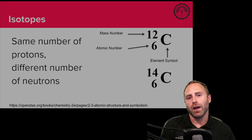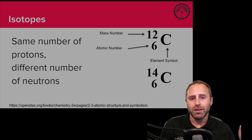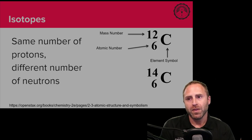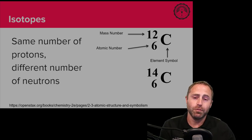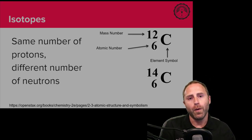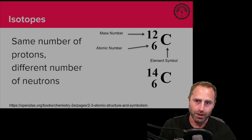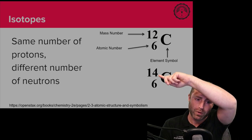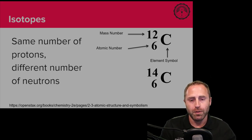Based off of that elemental symbol we can say we've got carbon. The bottom number is our atomic number, and the atomic number is the number of protons we have. For C-12 and C-14 they have the exact same number of protons — because they have the exact same number of protons, it is the exact same element. The difference between them is the neutrons, and that's why their mass numbers — the number above, like 14 — are different.